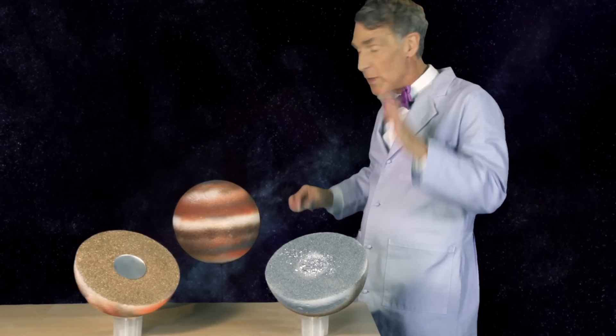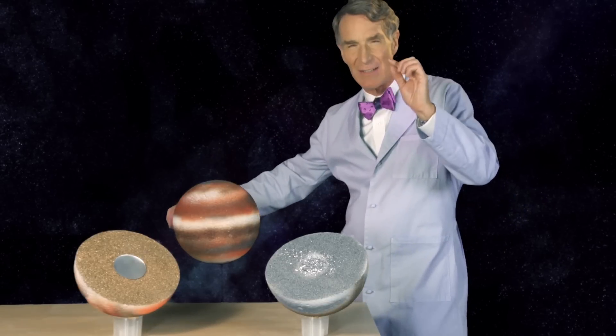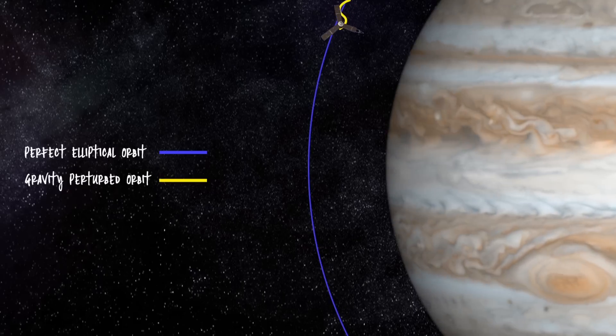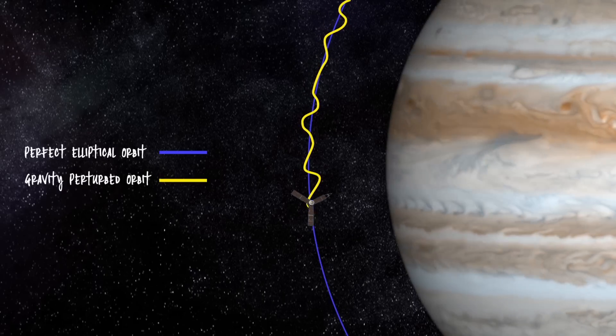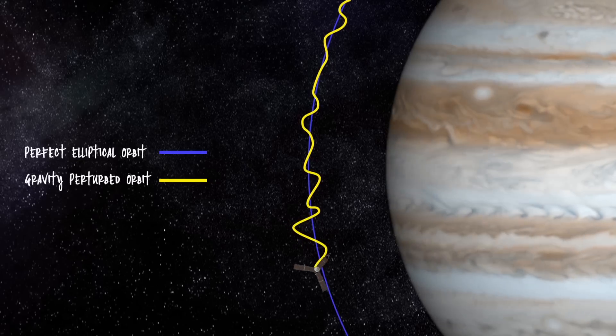Now, as it orbits, we strongly believe that there'll be slight variations in its path due to tiny variations in the gravity of Jupiter. And that will help us figure out what's inside.